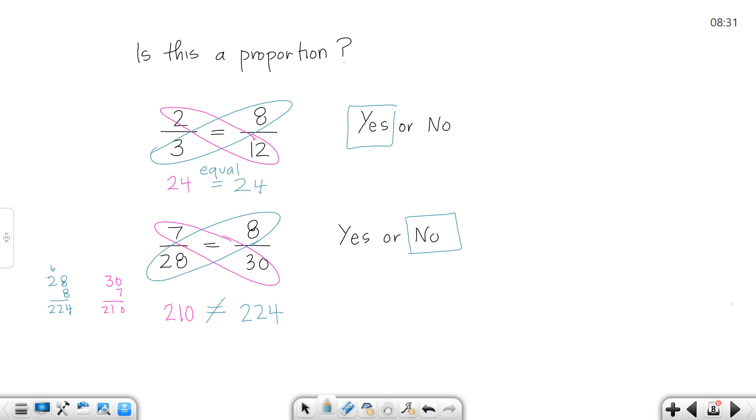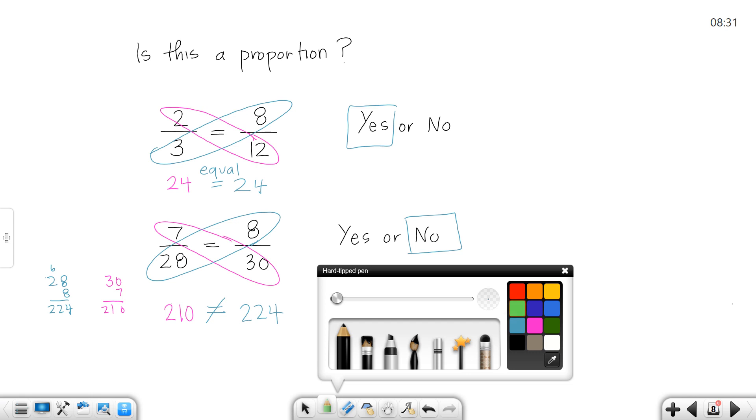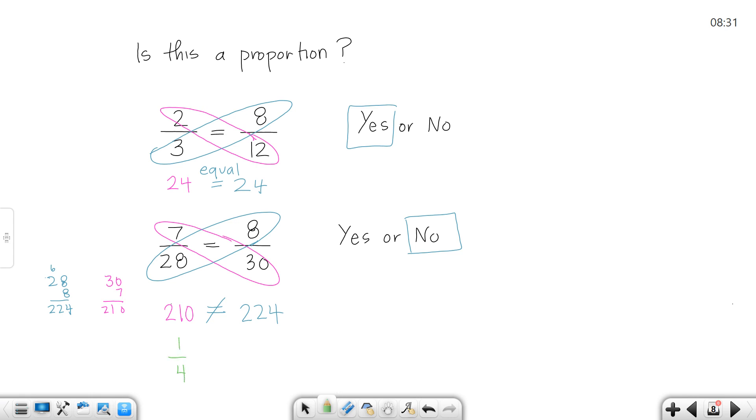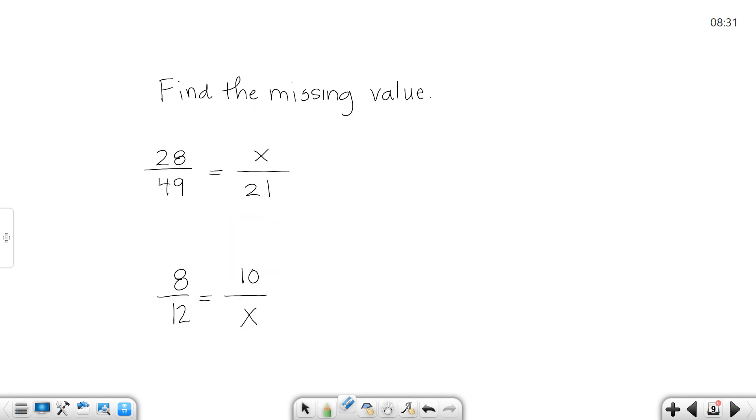You could also do them by reducing. If you reduce 7 over 28, the number that you would get is 1 fourth. And if you reduce 8 over 30, the number that you would get is 4 fifteenths. And 4 fifteenths and 1 fourth are not equal fractions. If they're not equal fractions, it's not a proportion. The easiest way is the product, though.